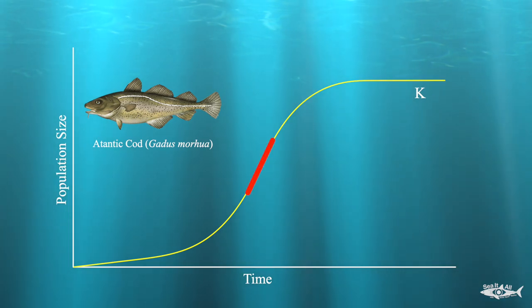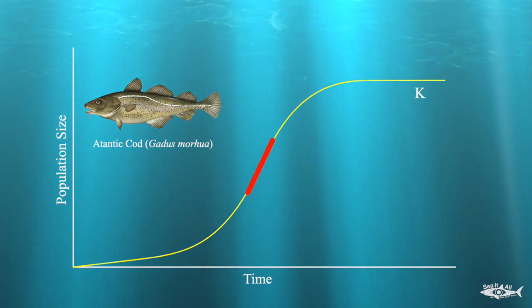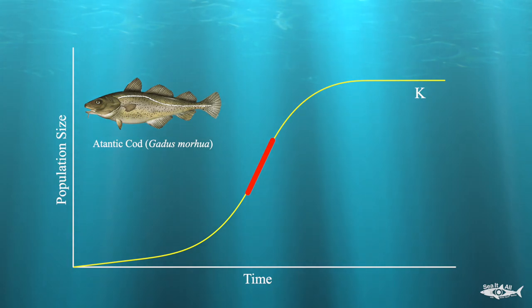When the cod population nears its environment's carrying capacity, there are a lot of cods around, which means there might not be enough food for more cods to be added to the population, or maybe they become an easier target for their predators. This leads to the mortality rate becoming equal to the survival rate and the population size stabilizing. But in the middle, there is enough cods for birth rates to ramp up and enough room for growth, leading to a peak in growth rate.